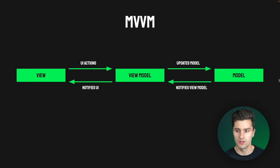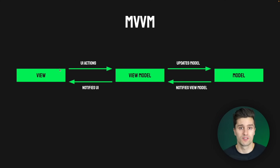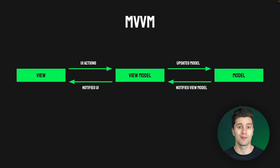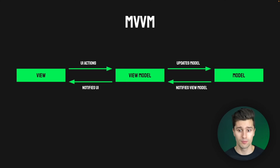Looking at this rough MVVM sketch, the View on the left is basically just your app's UI — what's visible on screen for the user. Then on the other hand we have the Model, which is where your app's data lives. For example, in a contacts list app this would be where you have your database and list of contacts, and also where you interact with a remote API. The ViewModel is the bridge between the View and the Model — that's why it's called ViewModel.